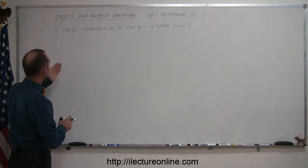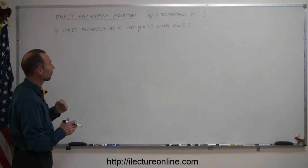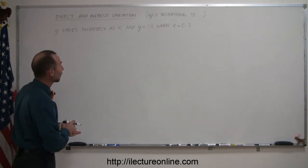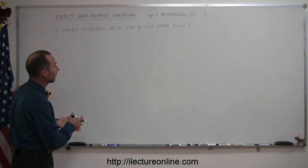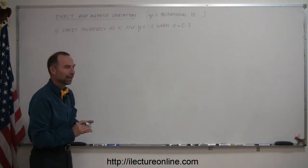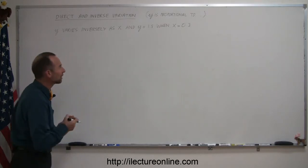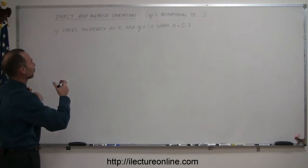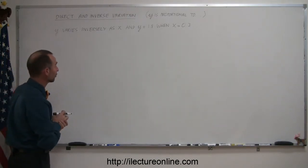In this case we have y varying inversely as x, or you can say y is proportional to the inverse of x. When x is equal to 0.3, y is equal to 1.8. What we're trying to do here is come up with the constant of proportionality and the equation that describes the relationship between x and y given the following information.